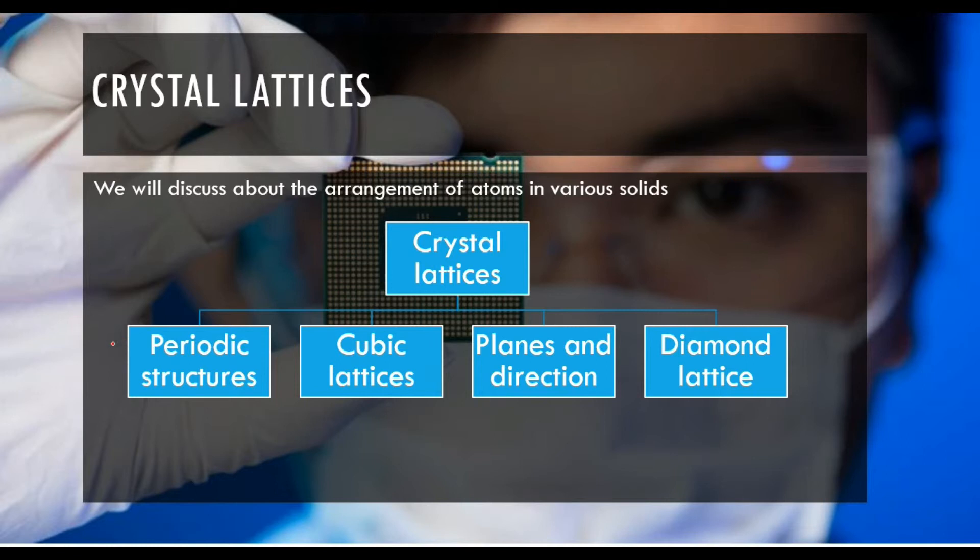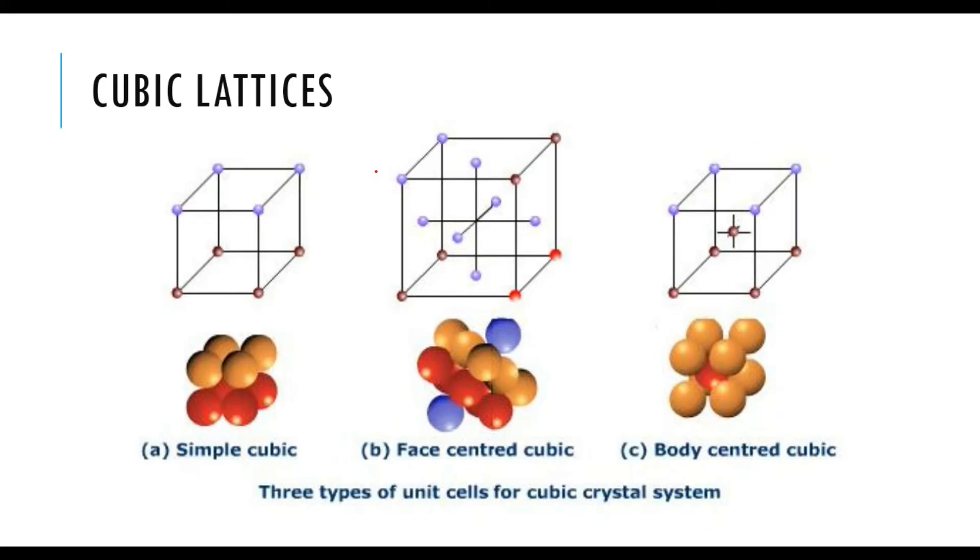We have discussed periodic structures. Now let's move on to cubic lattices. We're going to study the unit cell. The unit cell can be simple cubic, FCC that is face-centered cubic, or BCC that is body-centered cubic.